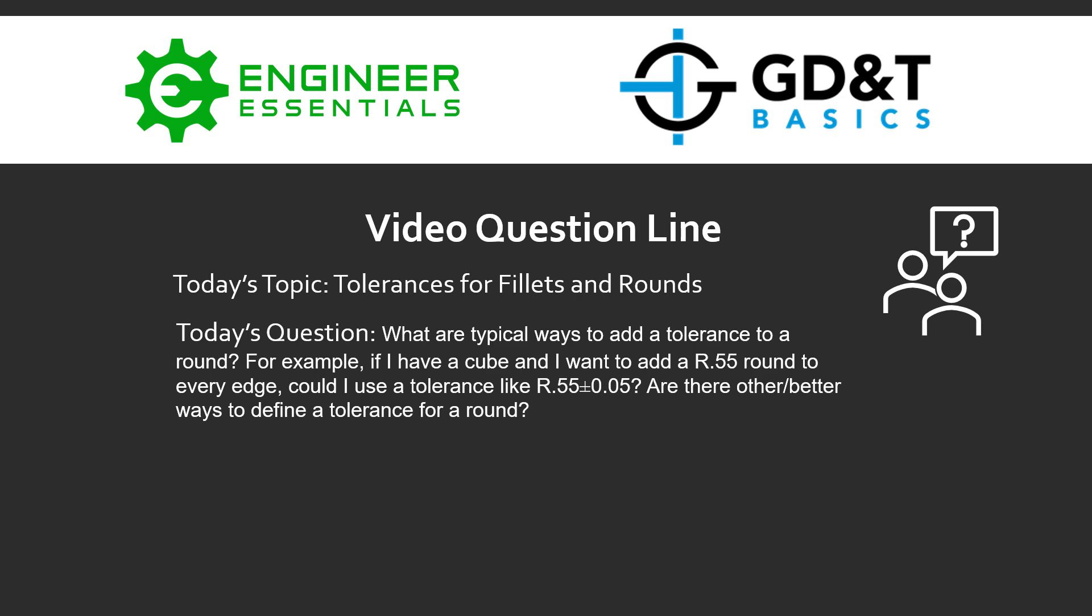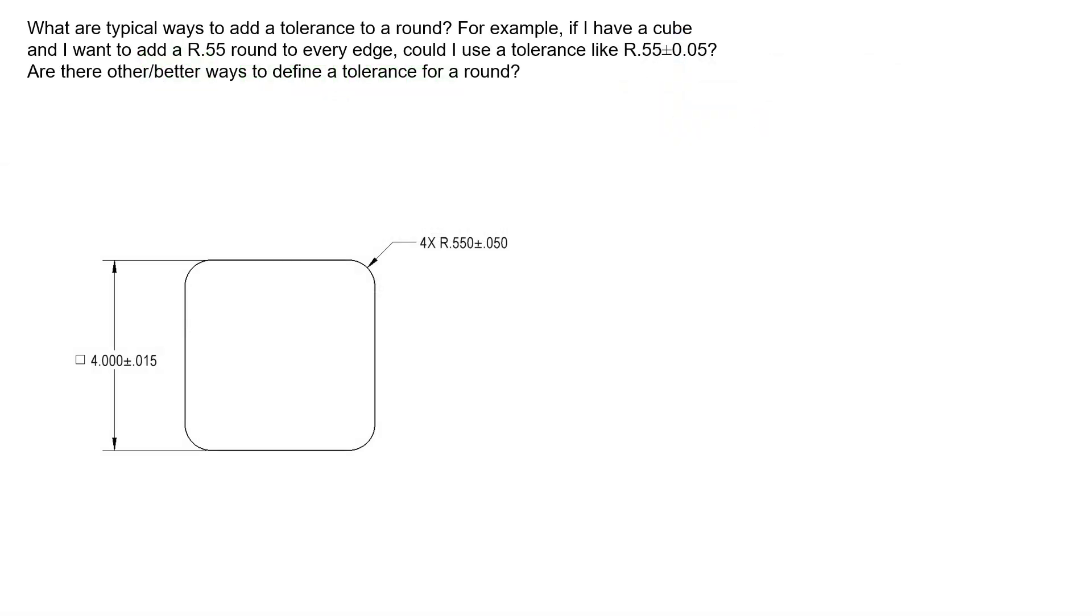It's a great question, and in order to answer, we're going to have to open up a bit of a can of worms. But let's go ahead and dig into the question here. We see the example with a cube that's got four corners. They all have a radius of 0.55 plus or minus 0.05. This is a perfectly acceptable way to dimension and tolerance an outside round. It's also a perfectly capable way of dimensioning an internal fillet as well.